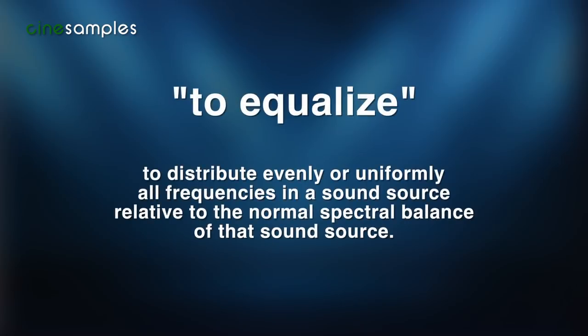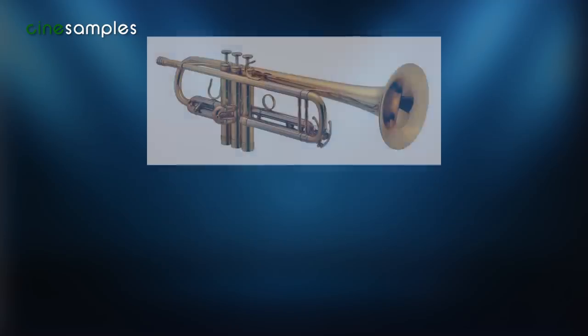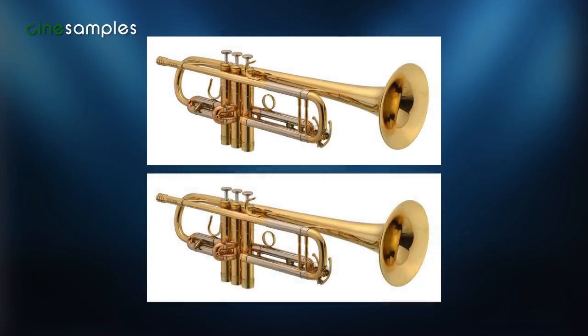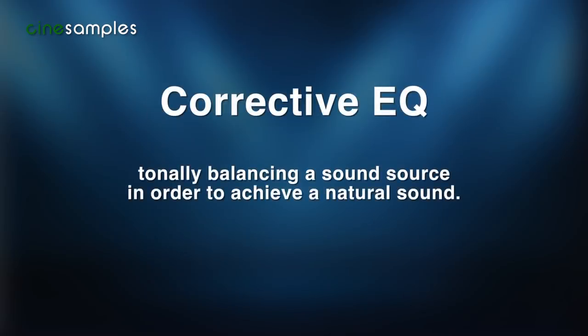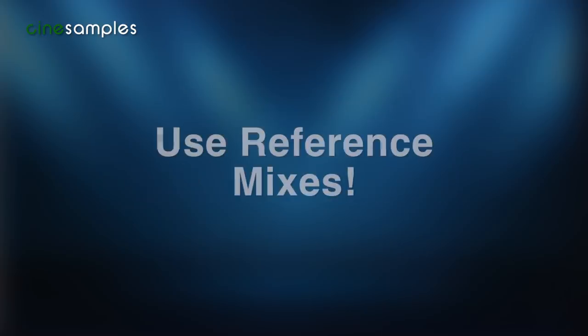The audio term 'to equalize' literally means to distribute evenly all frequencies in a sound source relative to the normal spectral balance of that sound source — this simply means make a trumpet sound like a trumpet. Corrective EQ is balancing a sound source so that it sounds like it should, and so an overabundance of a certain frequency does not ruin your mix. References are highly recommended — find a trumpet recording you like and try to match it. It's a great way to establish what a balanced tone sounds like on your monitors.